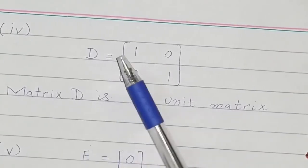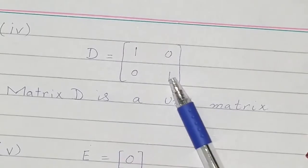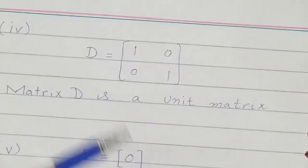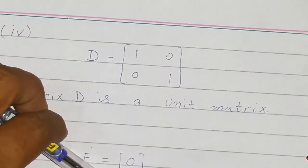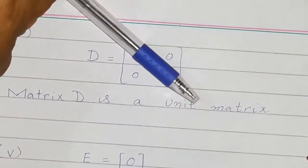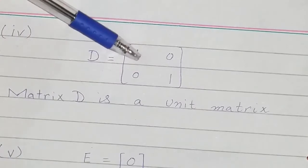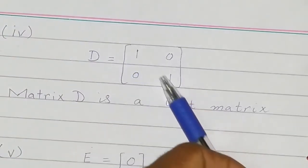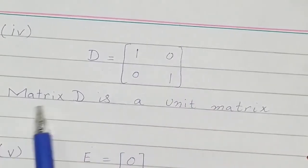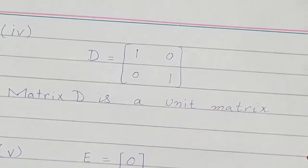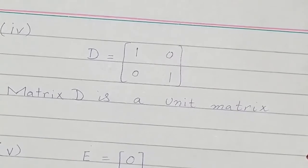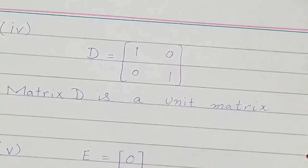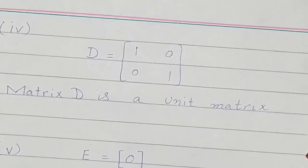If a matrix has ones in its diagonal, it is called a diagonal matrix. But if the elements in the diagonal are one only and all other elements are zero, this matrix is called the identity matrix. So matrix D is an identity matrix, another name for which is unit matrix.